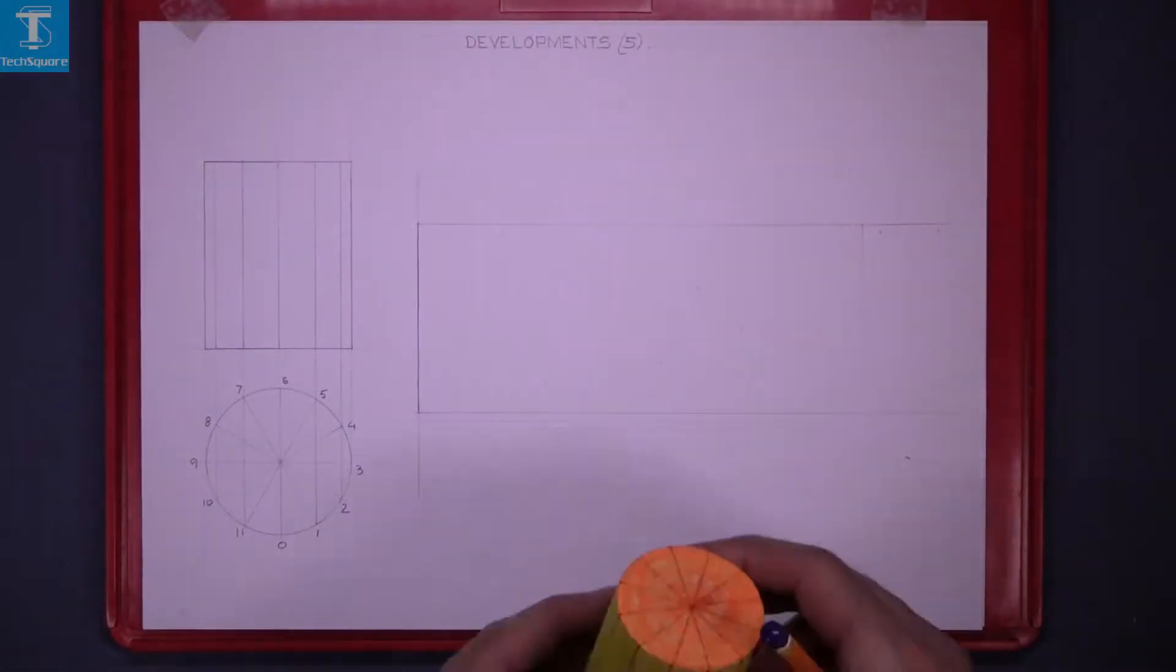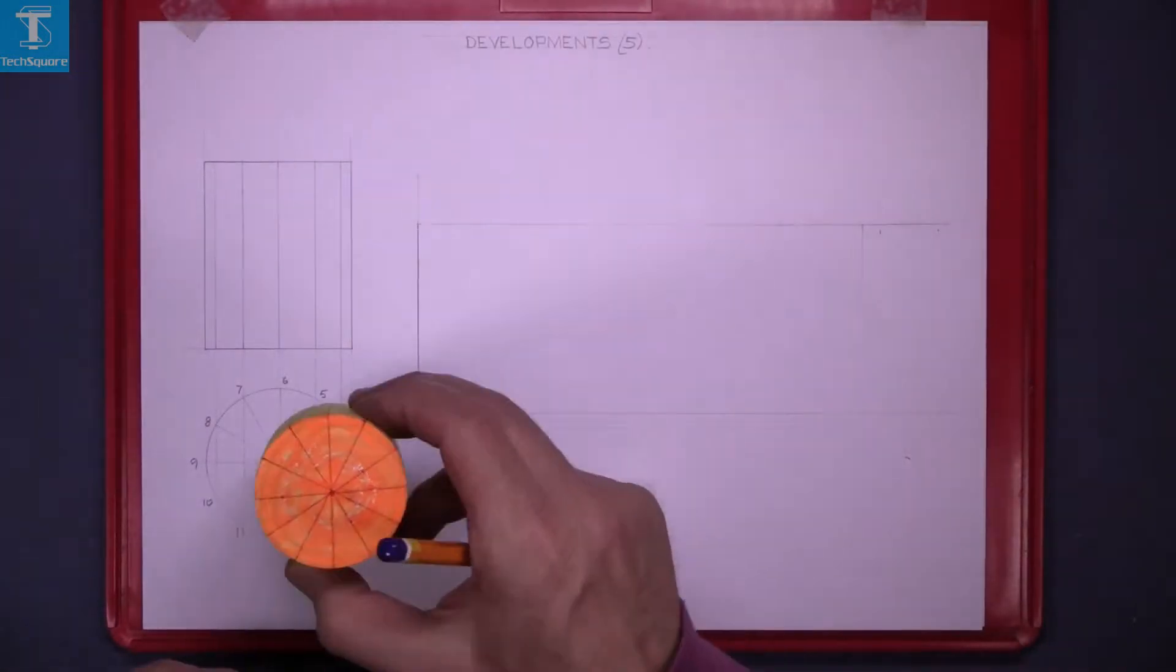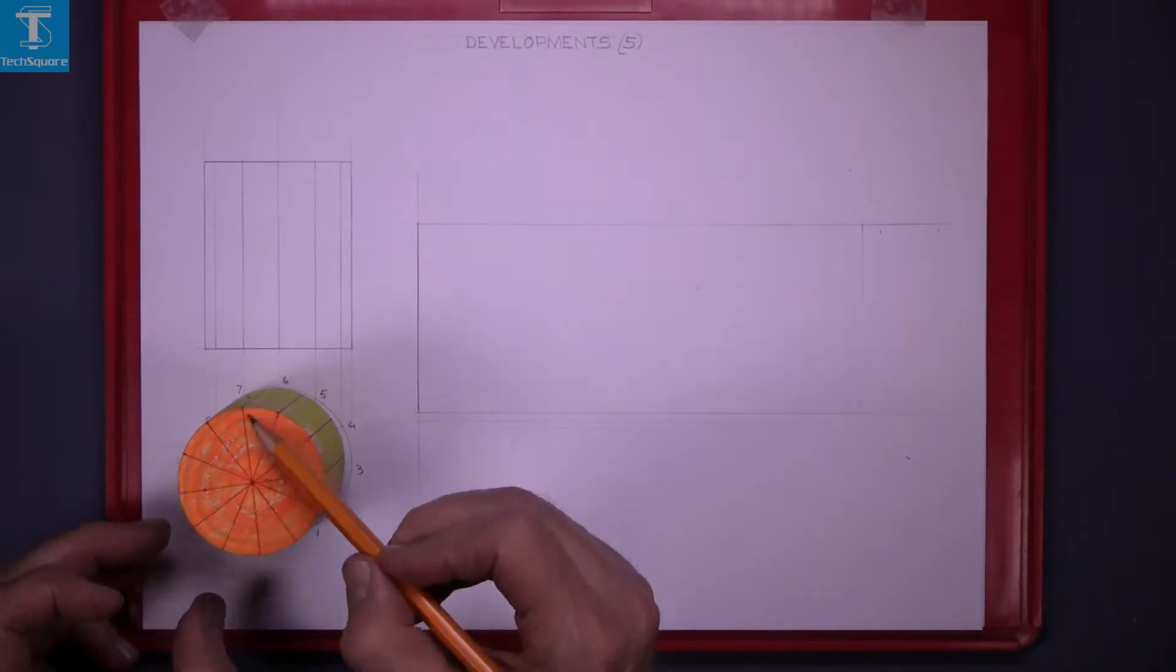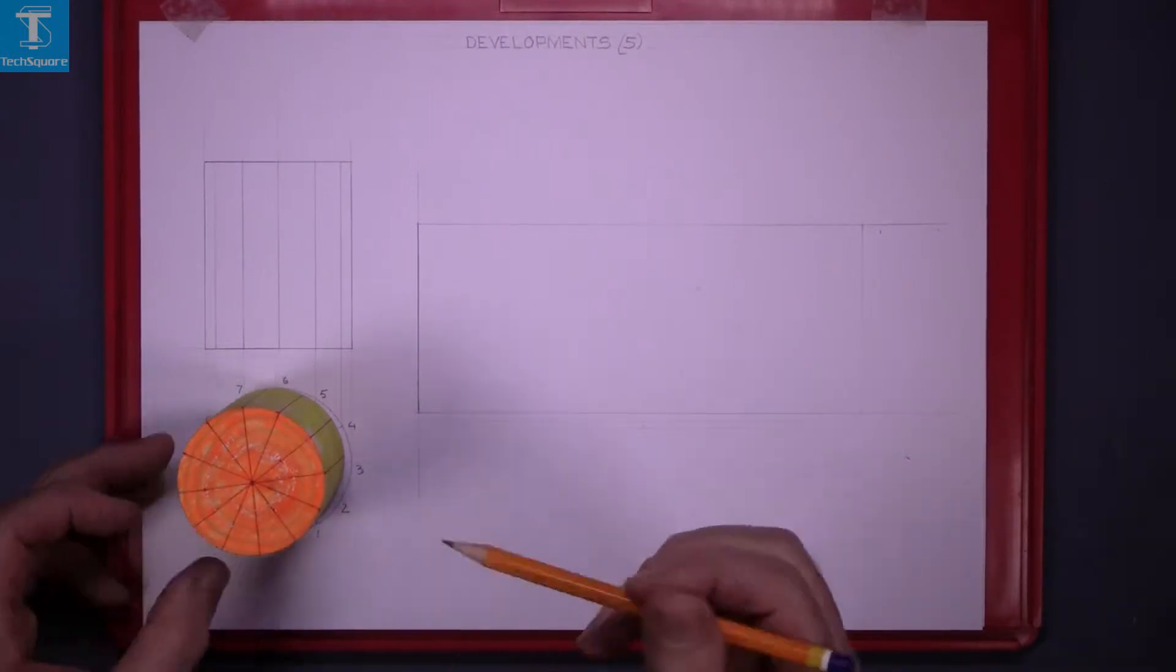Developments 5. Here we have a cylinder looking down on top of it. That's the view there which is a circle plan. It's divided into 12 equal parts.